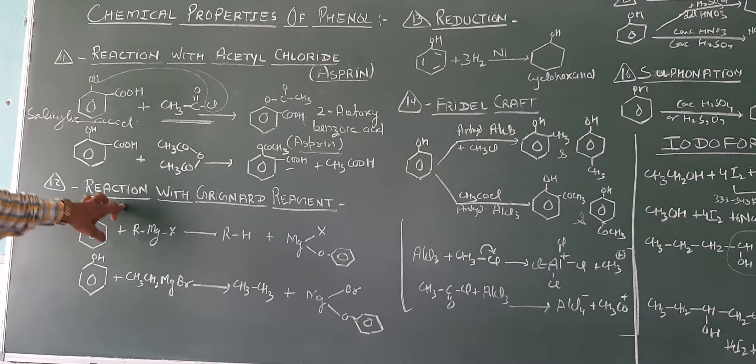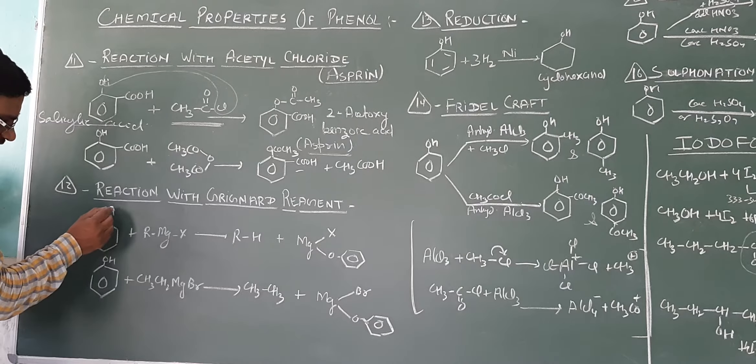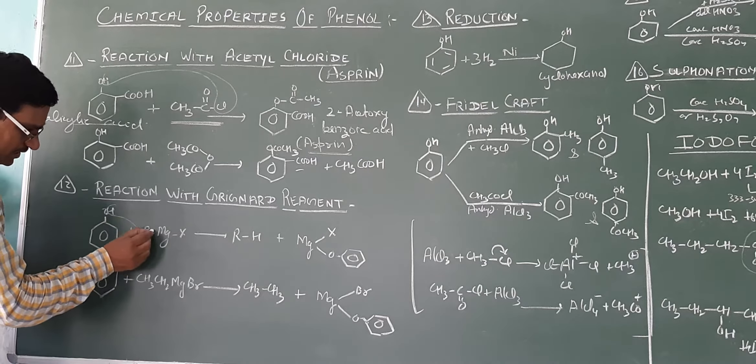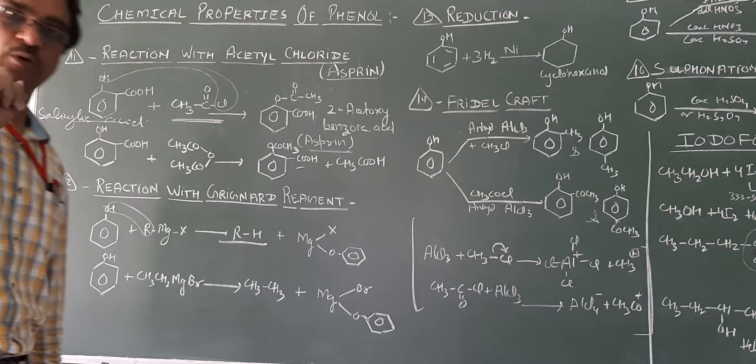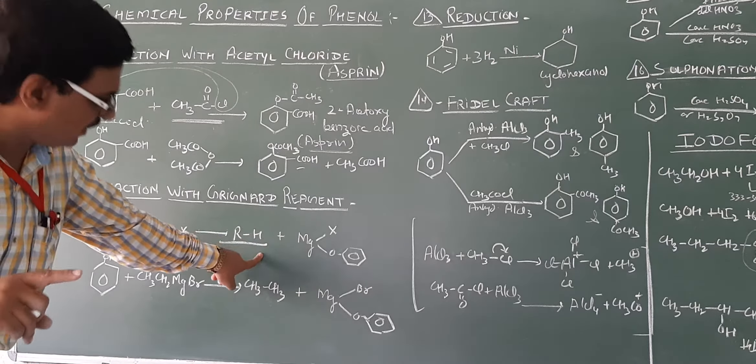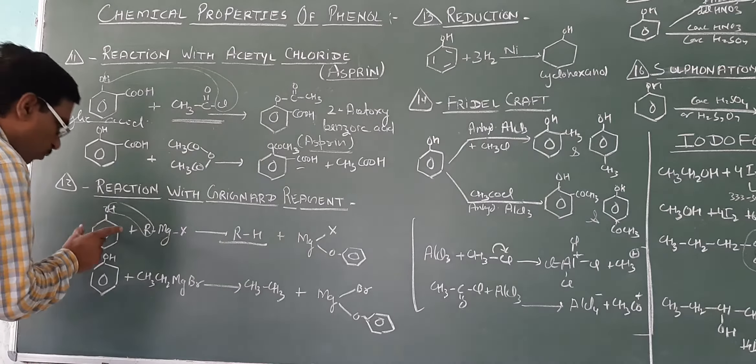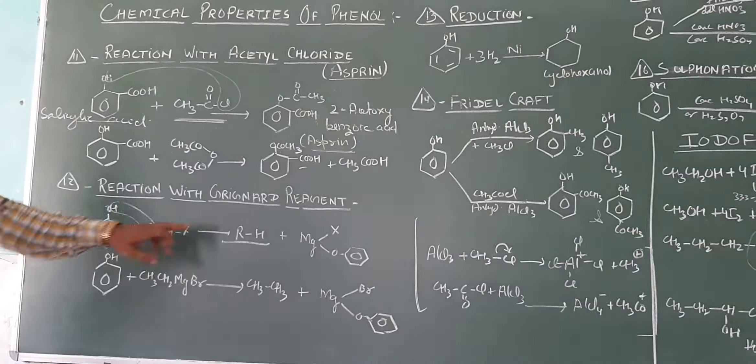Now, the next property is reaction with Grignard reagent. We have phenol and phenol reacts with Grignard reagent. So, RX will be alkane. The phenol has aromatic compounds, closed chain compounds, open chain compounds, that is alkane.